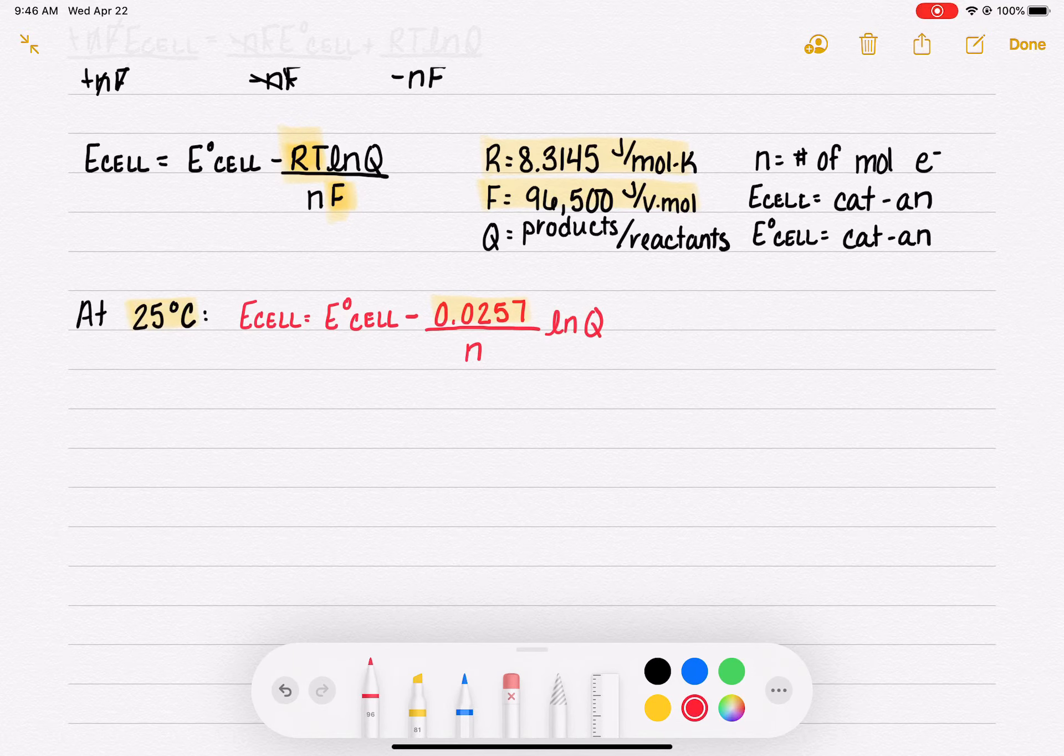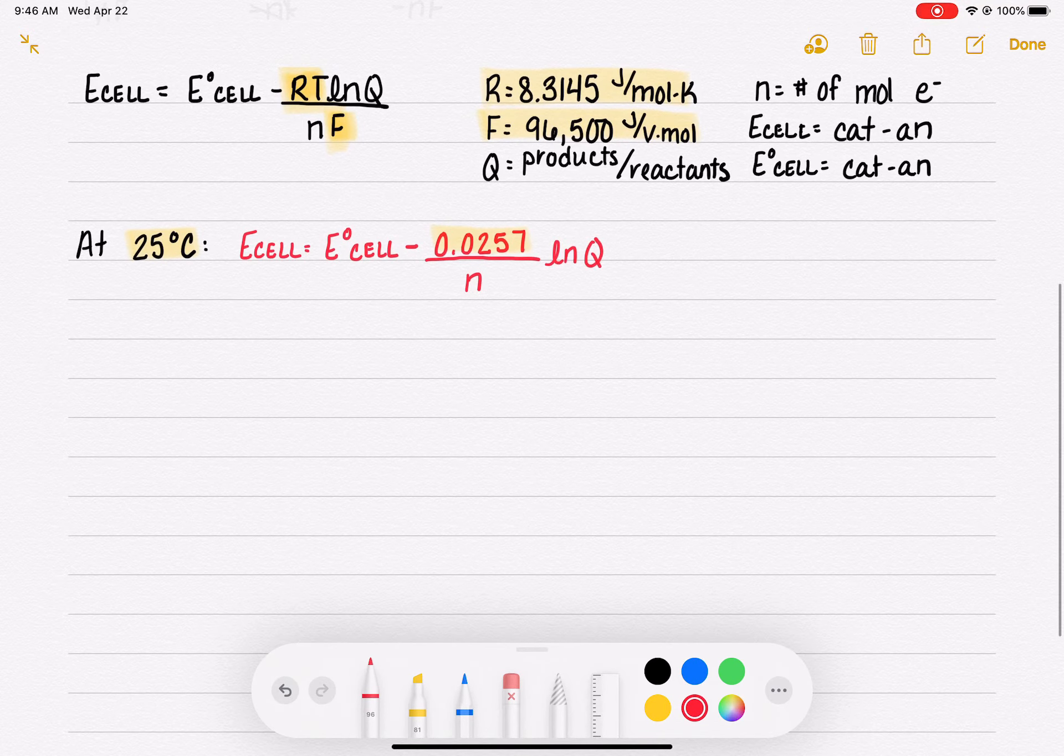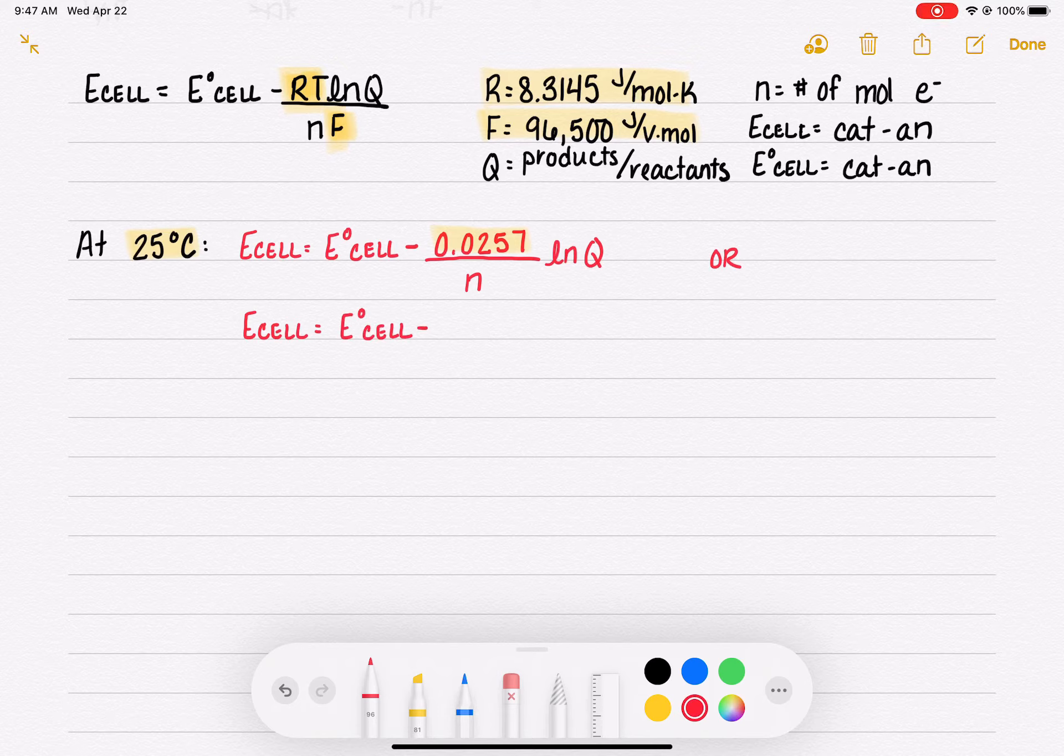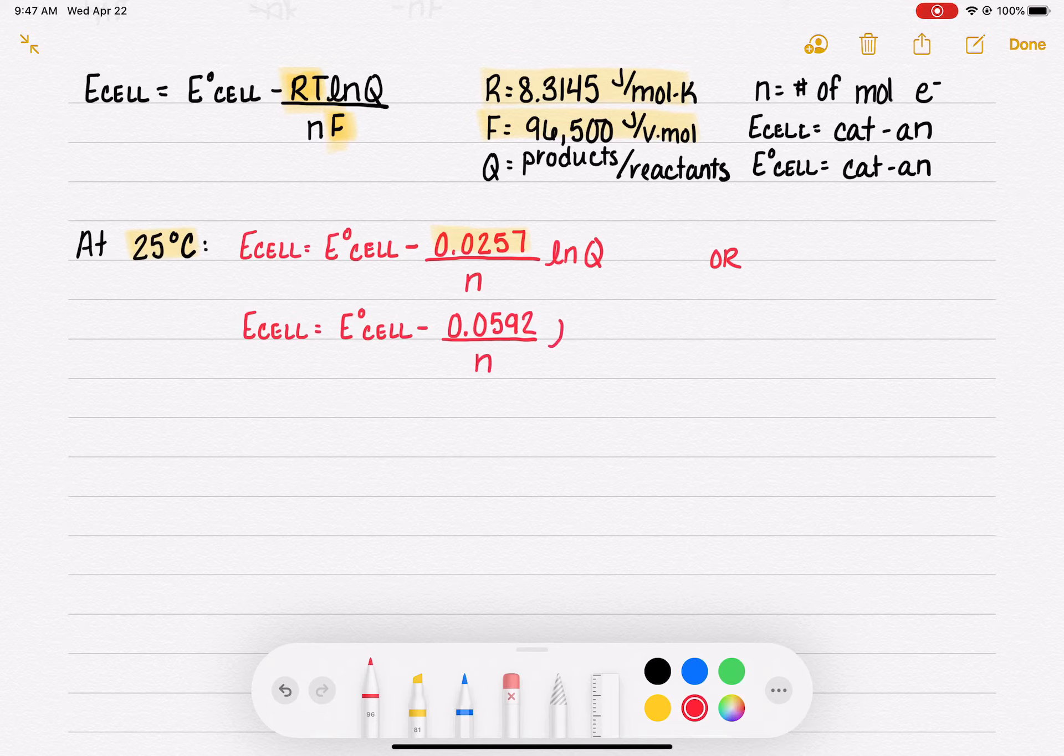Just like we saw yesterday, we have two different versions of this equation depending on which button you want to hit on your calculator. We can also do Ecell non-standard equals E°cell minus 0.0592 over n times the log of Q. These beautiful equations together are called the Nernst equations.